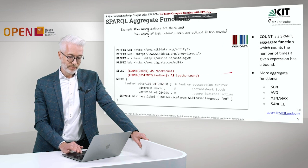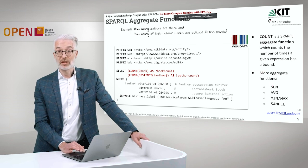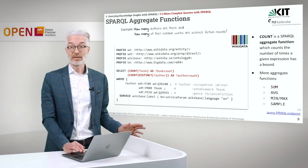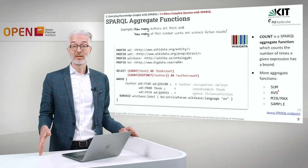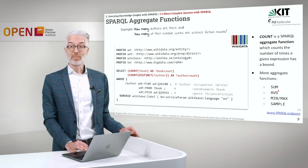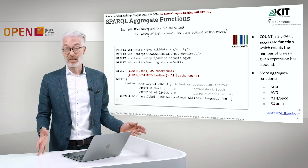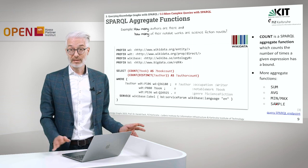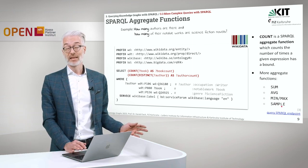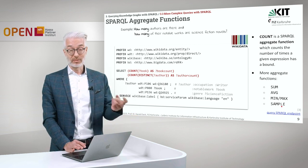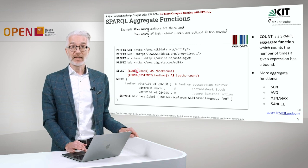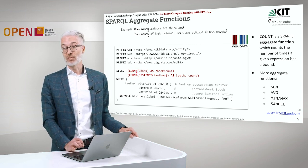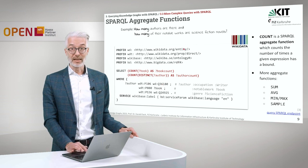That's the most simple aggregation function — the counting function. Of course there are more aggregation functions. If you have numbers in your result you can sum them up. Sometimes it makes sense to build the average, or the minimum, or the maximum. And then there is SAMPLE as an aggregation function, which takes by random chance one of the values in the column you are aggregating within your SELECT query.